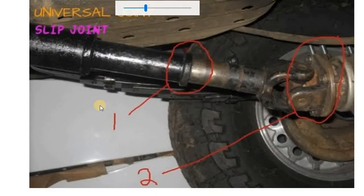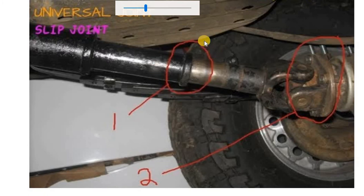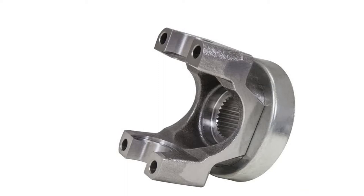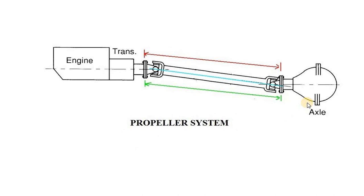यह हमारा universal joint है और यह हमारा slip joint है — इससे थोड़ा बहुत propeller shaft की लंबाई adjust करने में मदद मिलती है। यह joint जिसे हम slip joint कहते हैं, और यह है universal joint। इस तरह का universal joint होता है — यहाँ से एक तरफ propeller shaft fix होगी, दूसरी तरफ differential fix किया जाएगा।